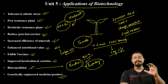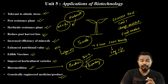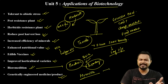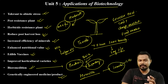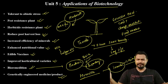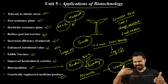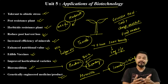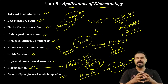Finally, genetically engineered medicine products. For example, humulin — which is human insulin used to treat diabetes. Diabetes is a very common disease in the 21st century, and insulin is required to treat it.